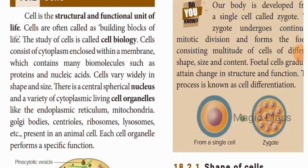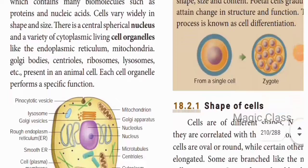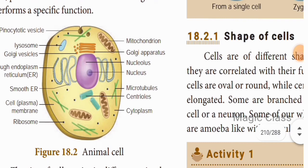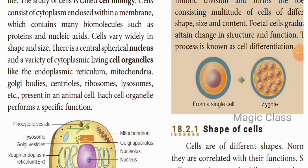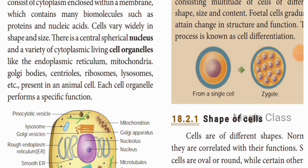Cells consist of cytoplasm enclosed within a membrane, which consists of many biomolecules such as proteins and nucleic acids. The watery substance inside is the cytoplasm, and within it you have organelles such as centrioles, microtubules, nucleus, Golgi bodies, mitochondria, and ribosomes. Cells vary widely in shape and size. There is a central spherical nucleus and a variety of cytoplasmic organelles. We can see this in the animal cell diagram, and each cell organelle performs a specific function.